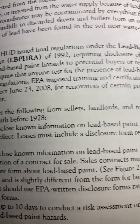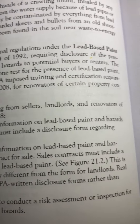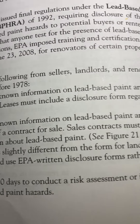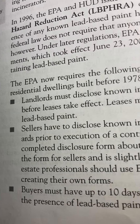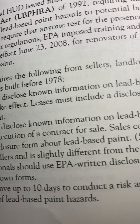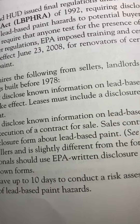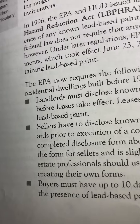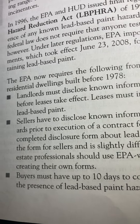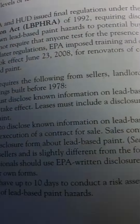Landlords must disclose known information on lead-based paint and hazards before leases take effect. Leases must include a disclosure form regarding lead-based paint. Sellers have to disclose known information on lead-based paint and hazards prior to execution of a contract for sale. Sales contracts must include a completed disclosure form about lead-based paint. This form for sellers is slightly different from the form for landlords. Real estate professionals should use EPA-written disclosure forms rather than creating their own. Buyers must have up to 10 days to conduct a risk assessment or inspection for the presence of lead-based paint hazards.